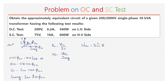From the SC test, WSC is equal to ISC squared into RE on the HV side, because the SC test is conducted on the HV side. It can also be written as ISC squared into RE2. The equivalent resistance referred to the secondary, RE2, is given by WSC divided by ISC squared.